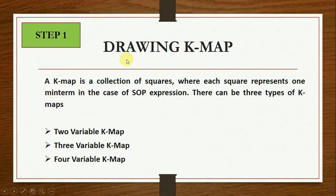A KMAP is a collection of squares where each square represents one minterm in case of an SOP expression. There can be 3 types of KMAPs: 2-variable, 3-variable, and 4-variable, and in this video we will talk about these maps only.